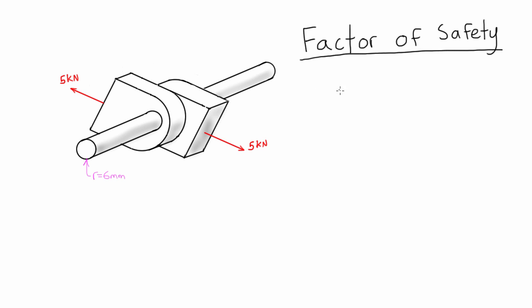Basically, when we have any type of member in a structure or a frame or a machine, anything that's made out of a material and has some dimensions, it's going to have an ultimate load. That basically means the ultimate load is just the load that when a member is subjected to it, it will either break or it will not be able to carry that magnitude of load again in the future.